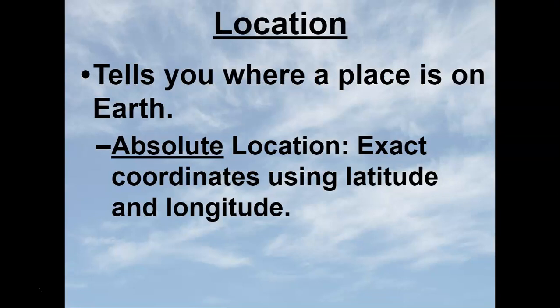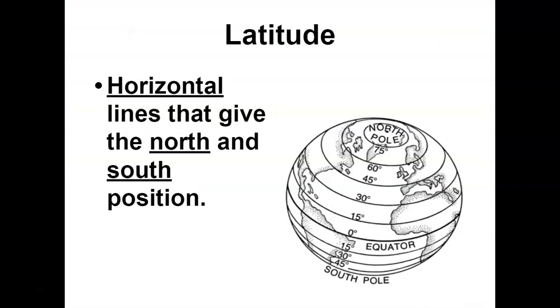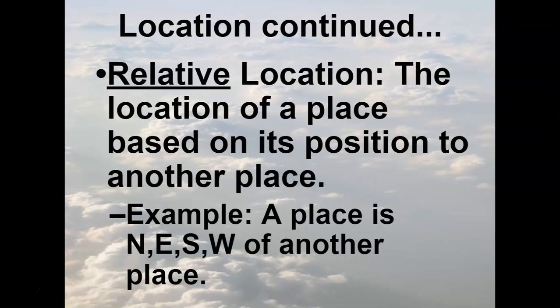The first theme is location. It tells us where you are on earth, and there are two types. There's absolute location, which is exact coordinates of latitude and longitude — like exactly where you are. We could look up the latitude and longitude for Bedford, Virginia. GPS works by using absolute location. But if we're not using GPS, when we're giving directions to people, we often use what we call relative location, which is based on where something is in relation to other places. If I was to tell you how to get to the Southern States Co-op, you know it's close to where Taco Bell and Sonic is.